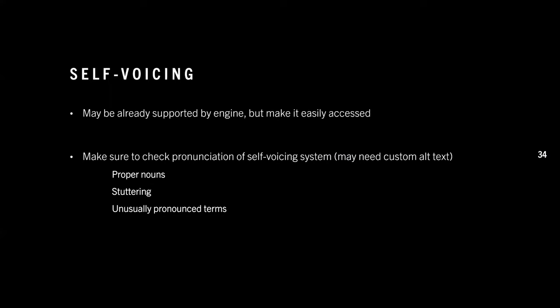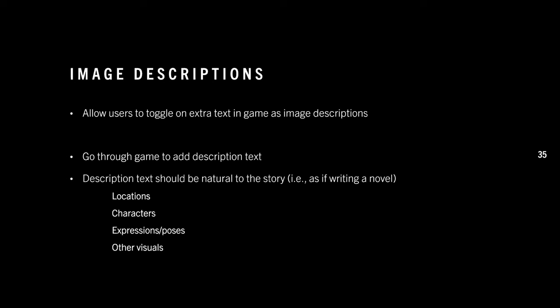Make sure accessibility features are easily accessible, and whichever ones you include, actually support them properly — though many will already be supported by the engine. My first recommendation is self-voicing. While it may already be supported by the engine or the user's computer, you should check the pronunciation of the self-voicing system. Proper nouns, especially fantasy names, stuttering, and unusually pronounced terms might get totally garbled by the computer, so you may need to add custom alt text to avoid weird pronunciations of your character names.